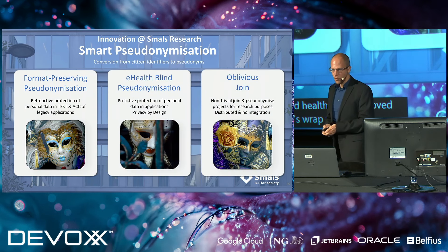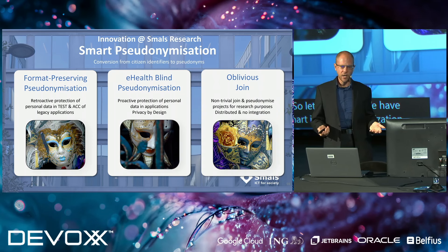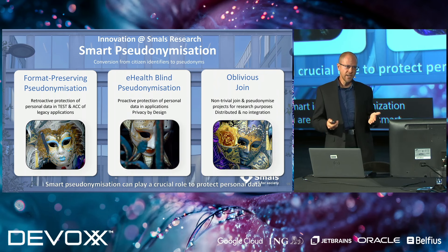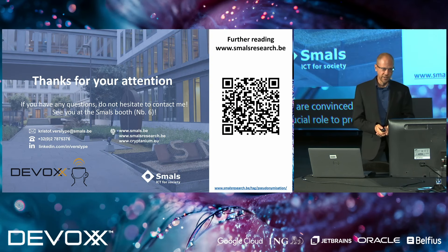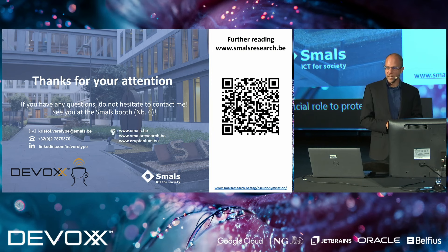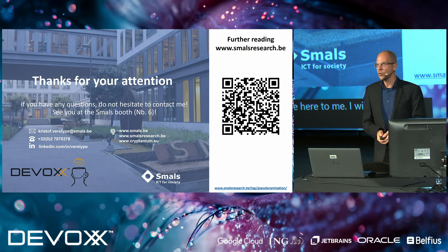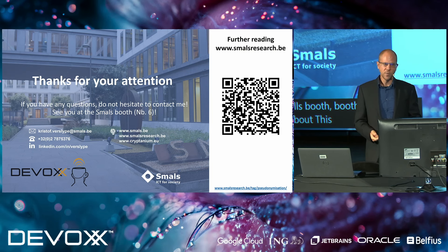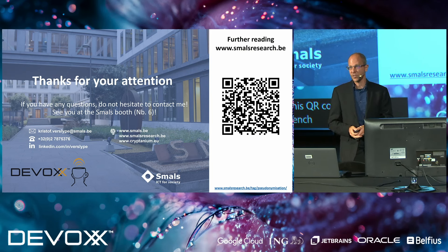Let's wrap up. We have seen three techniques for smart identifier pseudonymization, and I hope you are now convinced that smart pseudonymization — that pseudonyms — play a crucial role to protect your personal data. Thank you for your attention. If you have any questions, you can come to me here. I will also be at the SMALS booth, booth number six. If you want to read more about the content of this talk, you can scan this QR code. You will find a few articles in Dutch and French. Thanks again for your attention.